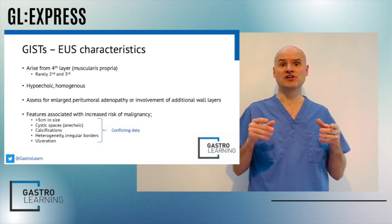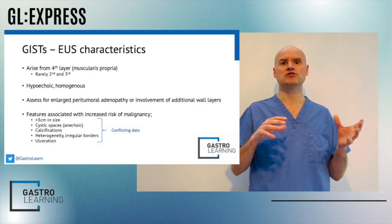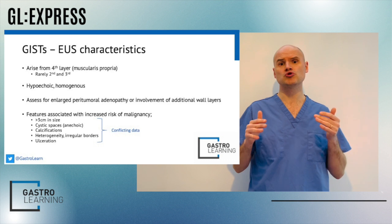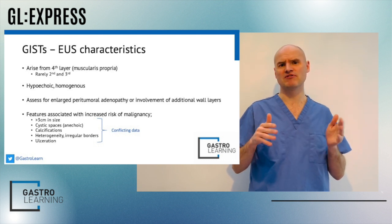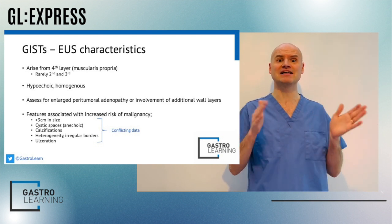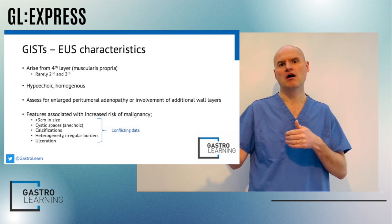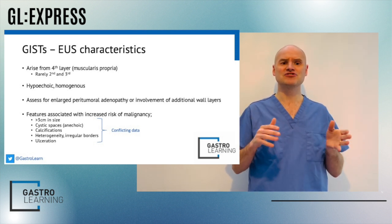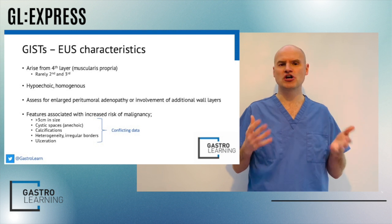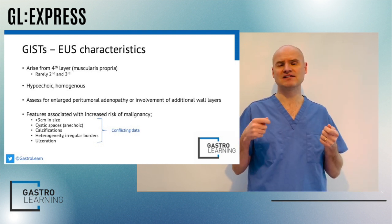Importantly, size does matter. Generally using the guidelines, there's about a two-centimetre cutoff in terms of whether this is a low-risk or high-risk lesion. Lesions less than two centimetres are considered low risk; more than two centimetres, high risk. Lesions greater than two centimetres certainly have to be referred for an EUS, and one needs to obtain a tissue sample.